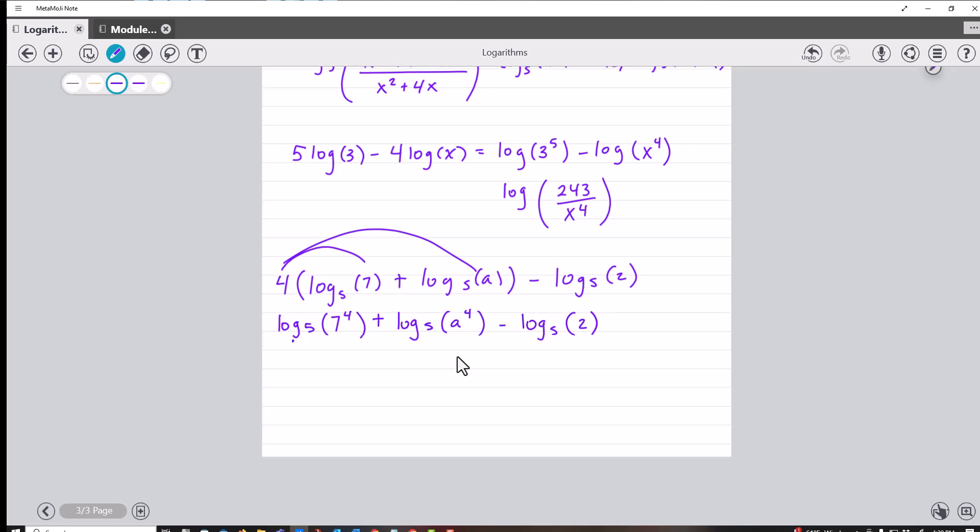And so this piece right here becomes multiplication log, this is all base 5, and the multiplication, 7 to the 4th power, 2401 times the a to the 4th, and then the minus is what makes it a quotient to look like that.